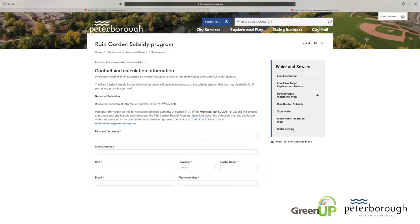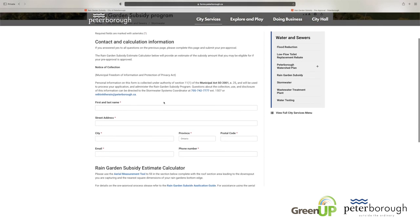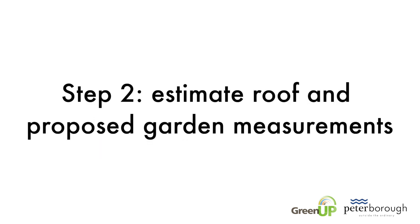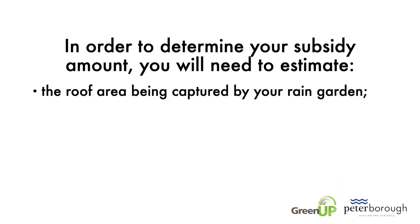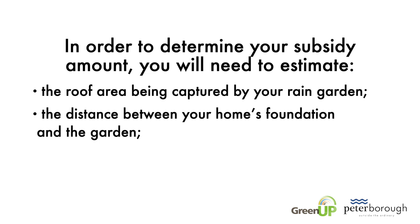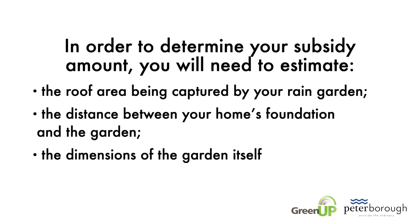If your property meets all eligible conditions, you will be redirected to a contact information and calculation page. In order to determine your subsidy amount, you will need to estimate the roof area being captured by your rain garden, the distance between your home's foundation and the garden, and the dimensions of the garden itself.